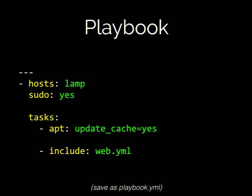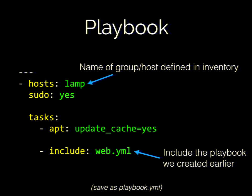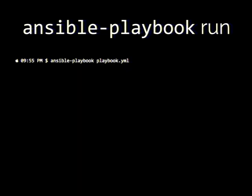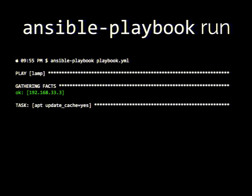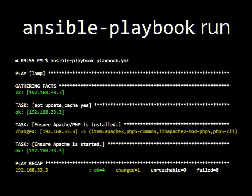We need a playbook to run that file. This is our orchestration playbook — we tell it the host group to run on (LAMP), we tell it to use sudo to log in as a non-administrative account, and at the bottom we include the web.yaml file we just created. When we run it, it gives you a recap showing how many servers had changes and how many were already matching your configuration.